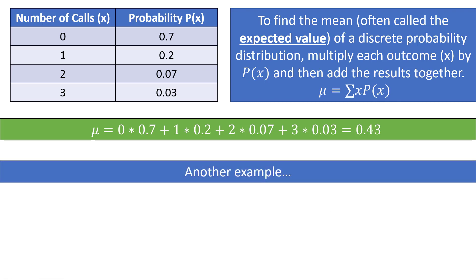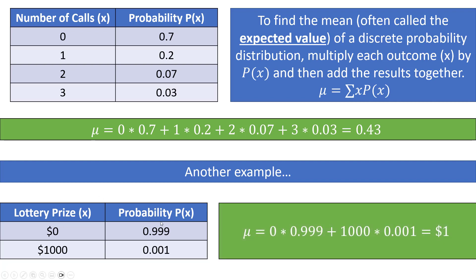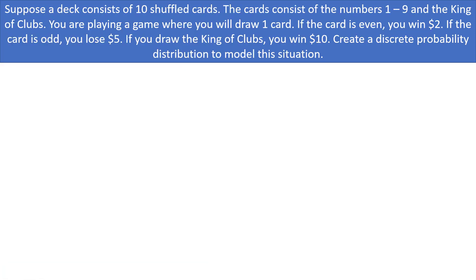Here's another example: suppose you're playing a lottery where there's a 99.9% chance of winning $0 and a 0.1% chance of winning $1,000. The expected value is (0)(0.999) + (1000)(0.001) = $1. Note that all probabilities in a discrete probability distribution must add up to 1, which holds true for both the lottery and the phone calls examples.